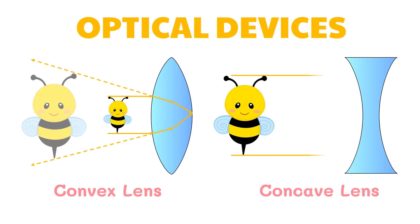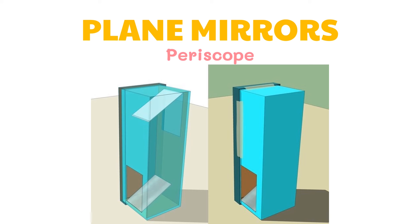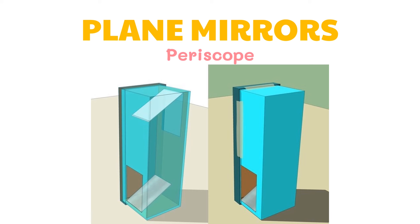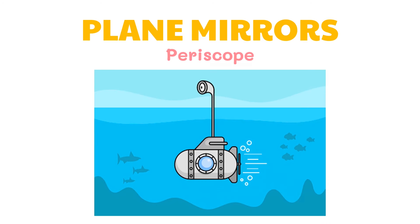How are plane mirrors used? A very good example is the periscope. A periscope is an instrument for observation over, around, or through an object, obstacle, or condition that prevents direct line-of-sight observation from the viewer's current position. A simple periscope consists of an outer case with mirrors at each end set parallel to each other at a 45-degree angle. Periscopes allow a submarine, when submerged at a relatively shallow depth, to search visually for nearby targets and threats on the surface of the water and in the air.